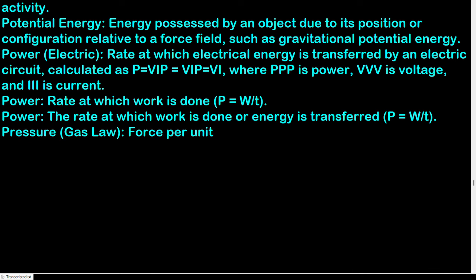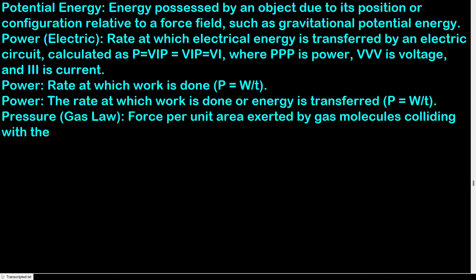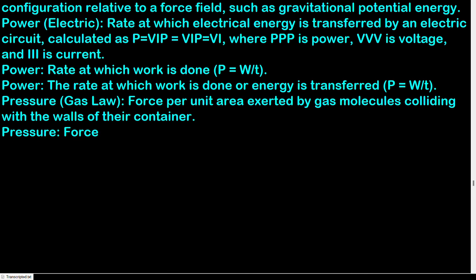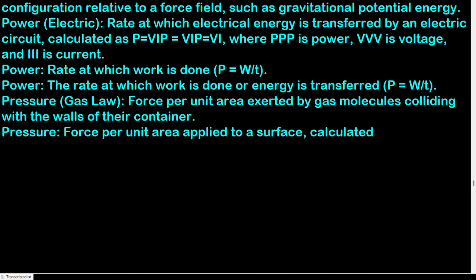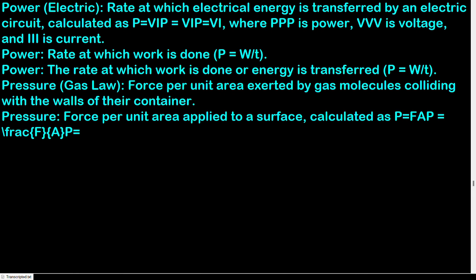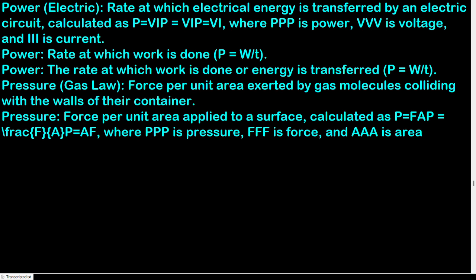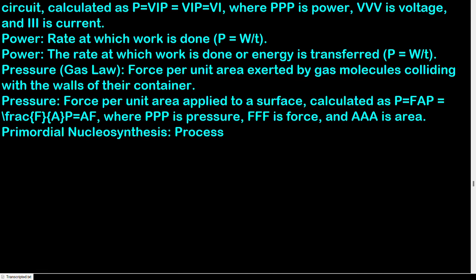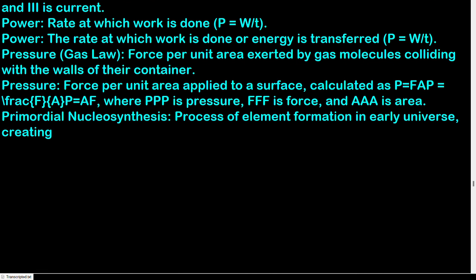Pressure: force per unit area applied to a surface; P = F/A. Gas law pressure: force per unit area exerted by gas molecules colliding with the walls of their container. Primordial nucleosynthesis: process of element formation in the early universe, creating light elements like hydrogen and helium. Principal quantum number (n): quantum number indicating the energy level of an electron in an atom.